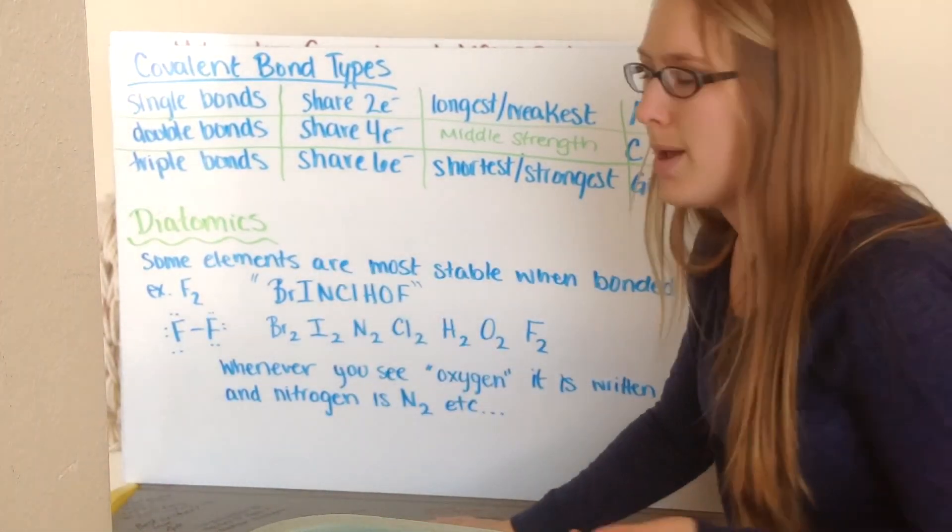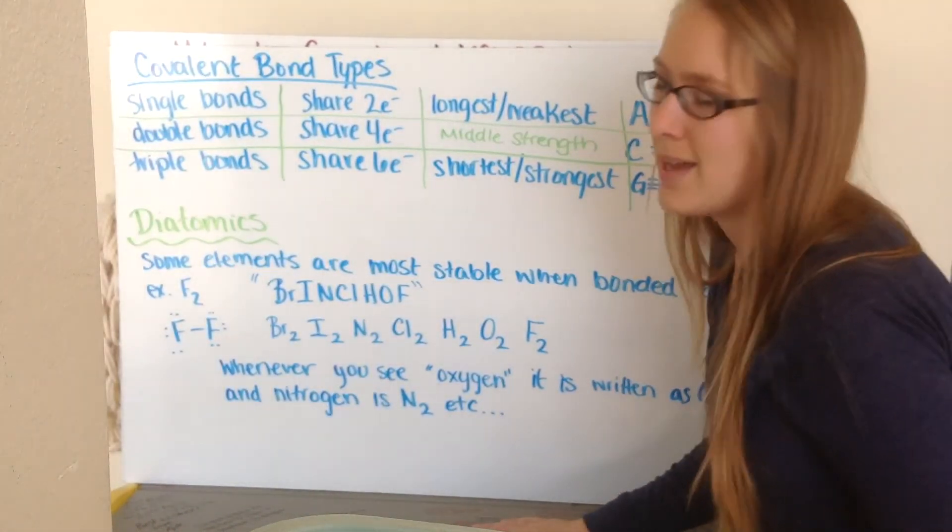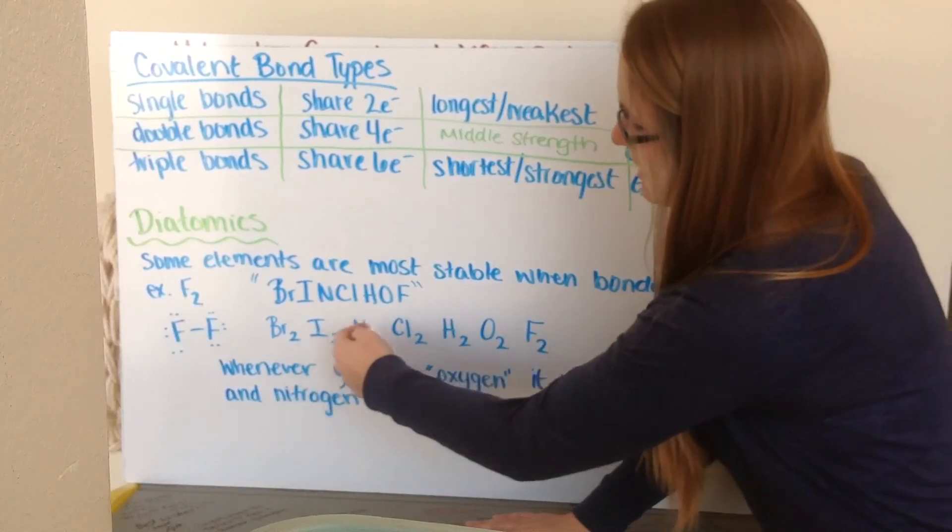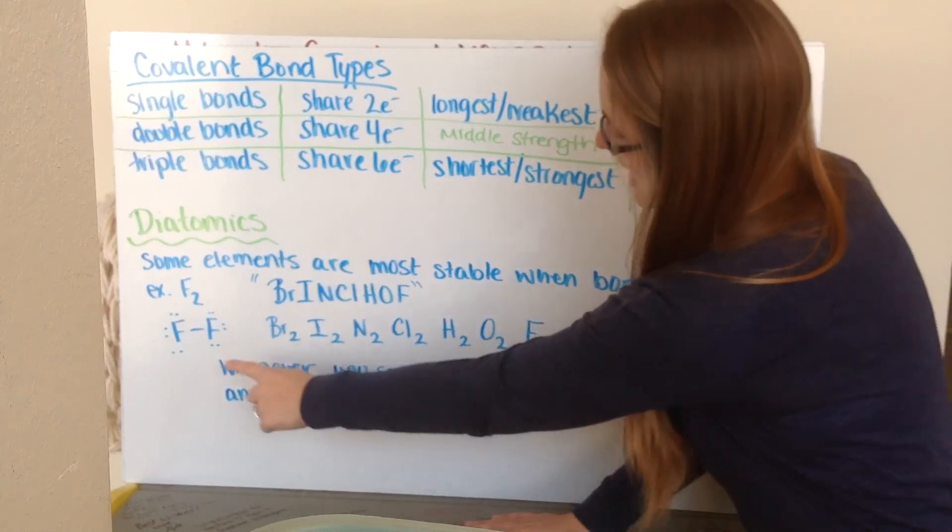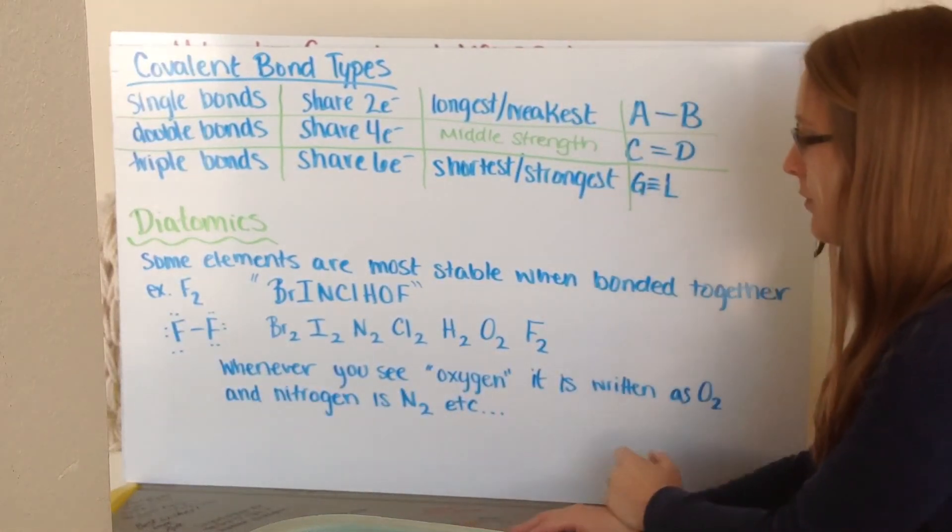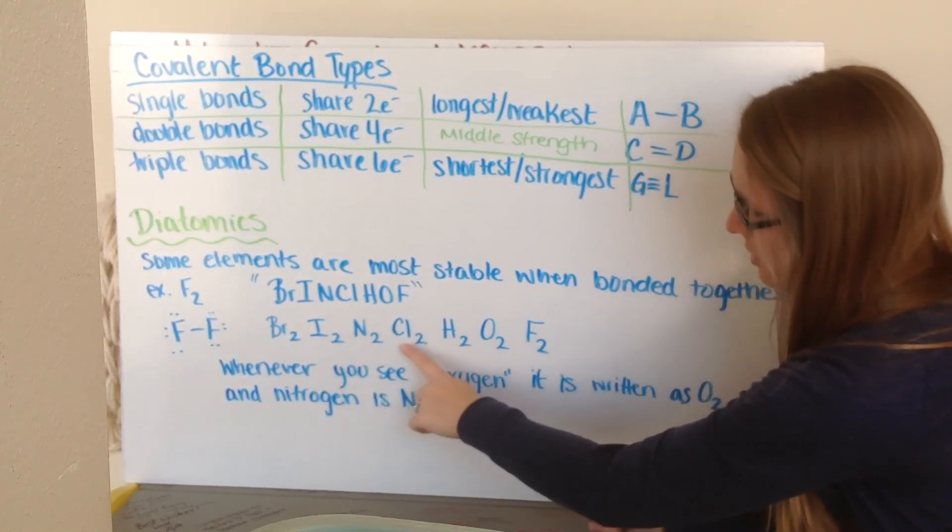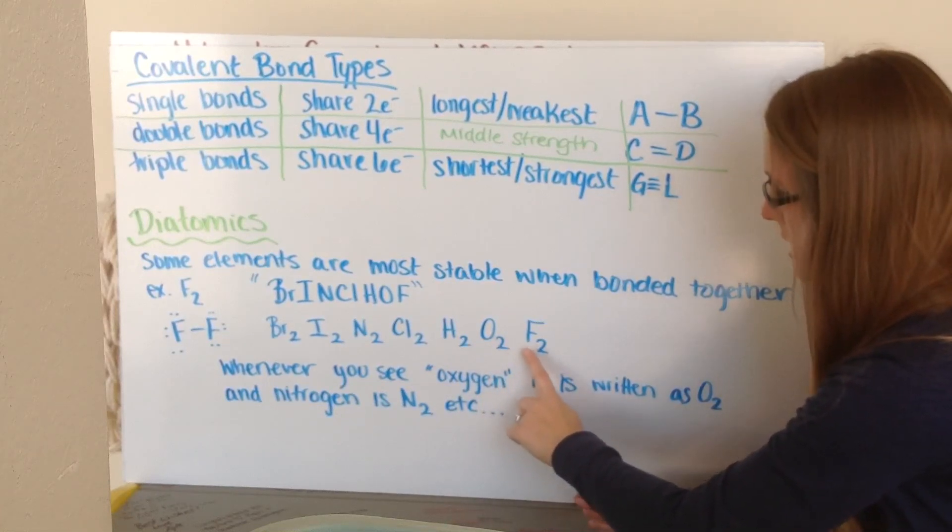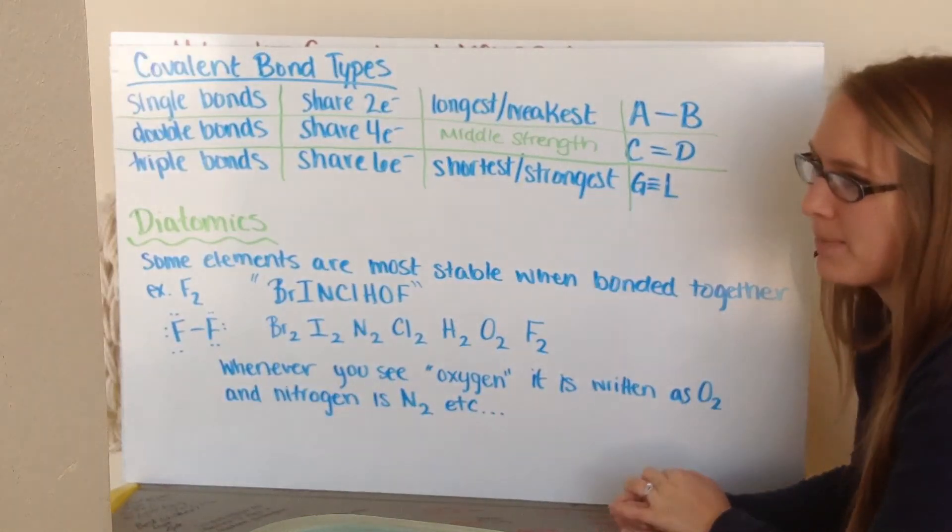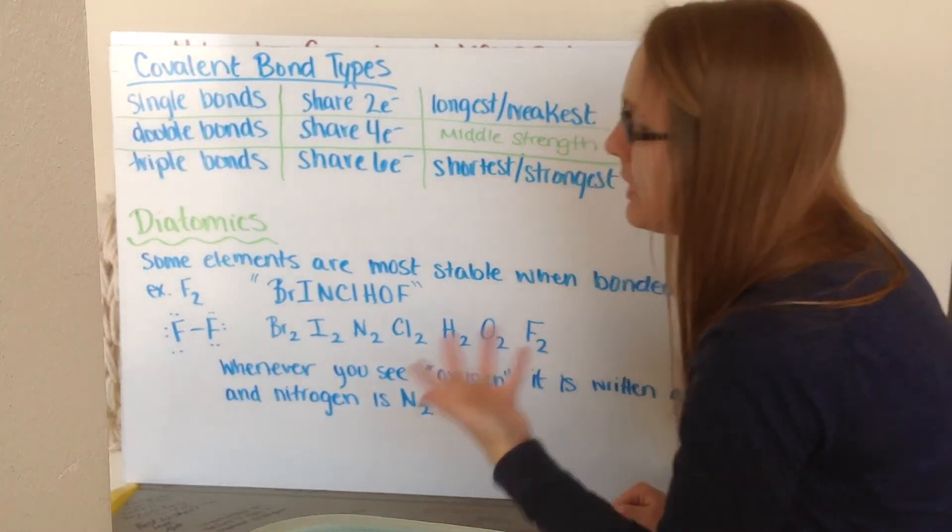So then we have diatomics. And we've talked about them briefly for a minute before. But these are some elements that are most stable when they're actually bonded together. So there's a special set of 7 of them. I refer to them as Brinkelhoff. Which is bromine, iodine, nitrogen, chlorine, hydrogen, oxygen, and fluorine. So an example of this would be like fluorine, which is F2 in a diatomic state. Where one fluorine is bonded to the other one with their valence electrons around. And their octets are now satisfied. So whenever you see any one of these diatomics, bromine would now be Br2, iodine is I2, nitrogen is N2, chlorine is Cl2, hydrogen is H2, oxygen is O2, fluorine is F2. So whenever you now see oxygen, you're going to write it as O2. Because that's how it really is in nature. We don't just have free floating single atom oxygens in our air that we breathe. It's O2. Same as with nitrogen in the air we breathe is N2. It's not just N.